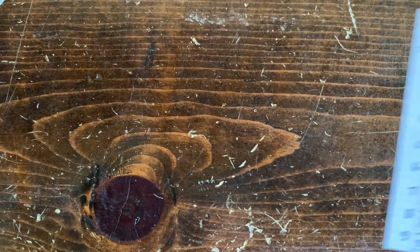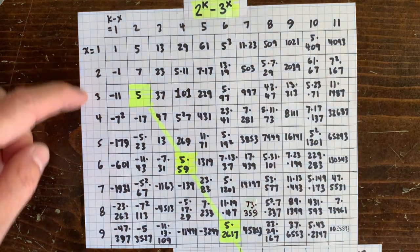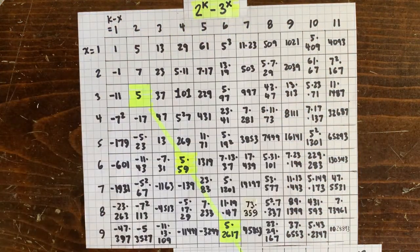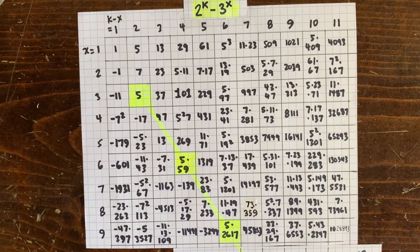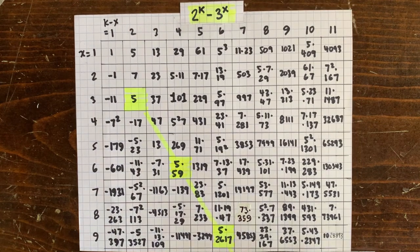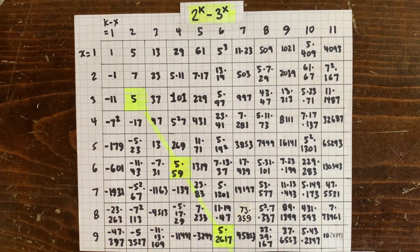How about 2 to the k minus 3 to the x? Here we have x along the left and k minus x across the top, with entries showing values of 2 to the k minus 3 to the x.